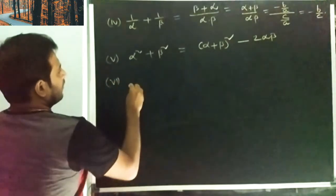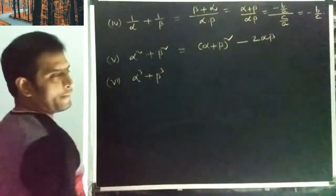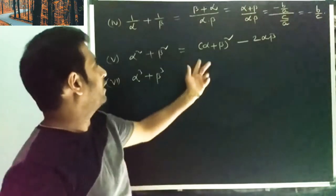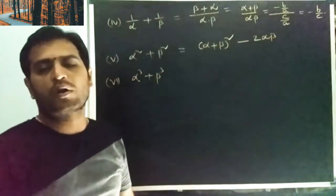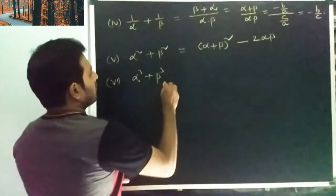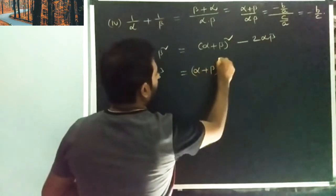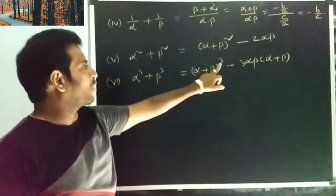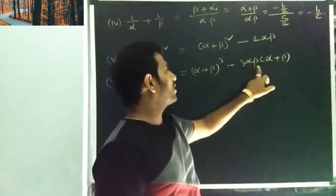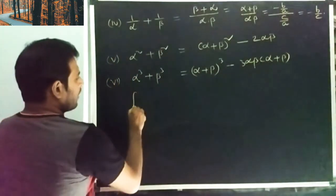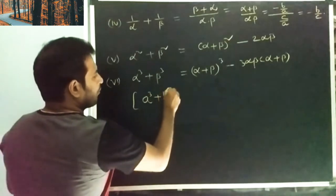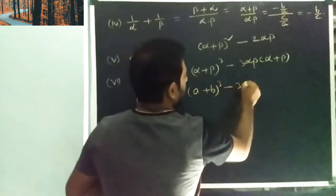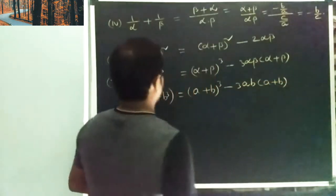Sixth one: alpha q plus beta q — meaning alpha cube plus beta cube. This can be written using the formula: a plus b whole cube minus 3ab into a plus b. So it equals alpha plus beta whole cube minus 3 alpha beta into alpha plus beta.